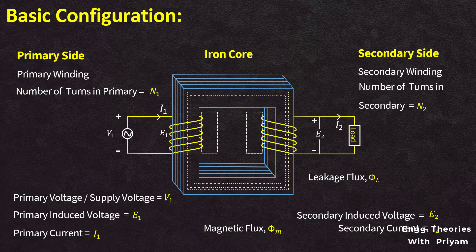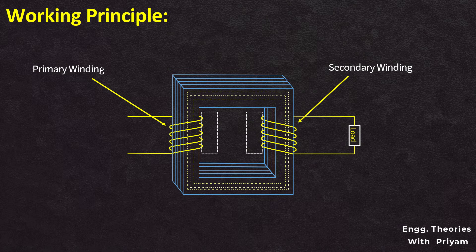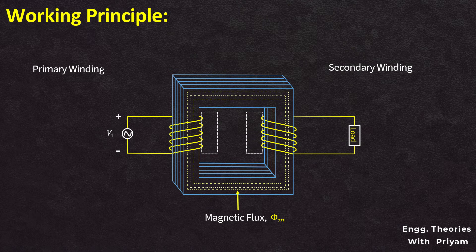The basic principle behind the working of a transformer is the phenomenon of mutual induction between two windings linked by a common magnetic flux. A transformer consists of two inductive coils — primary winding and secondary winding — which are electrically separated but magnetically linked to each other. When the primary winding is connected to a source of alternating voltage, alternating flux is generated in the magnetic core, which links both primary and secondary windings. The core provides a magnetic path for the flux to link with the secondary winding.